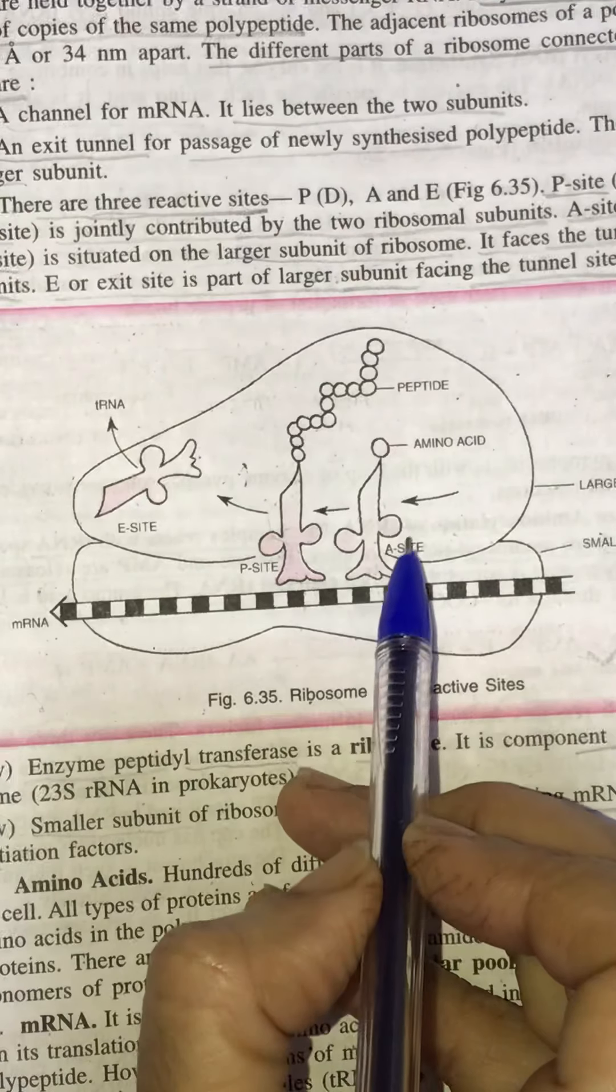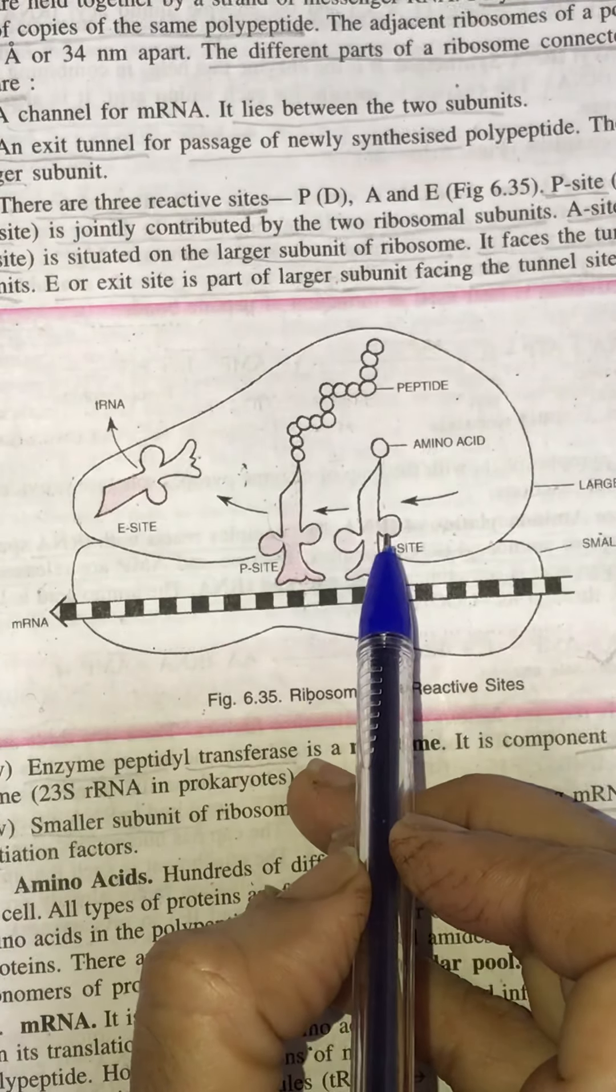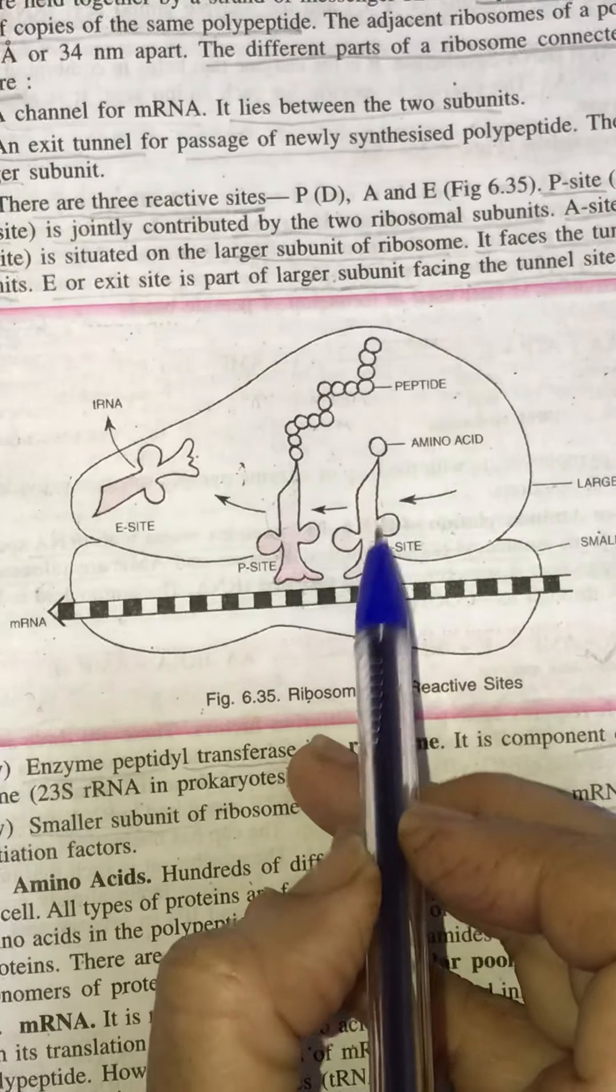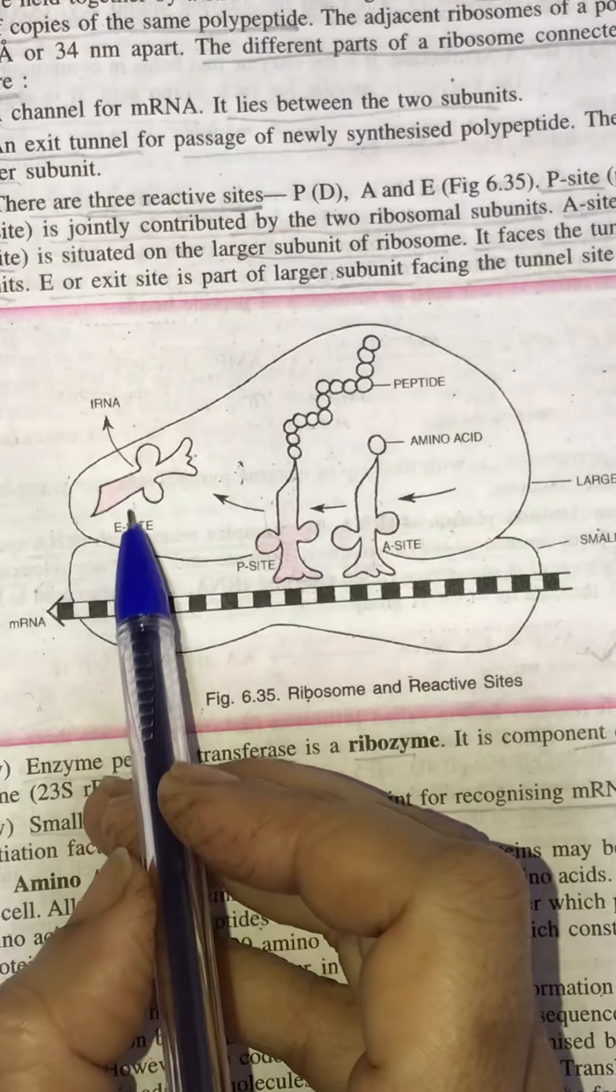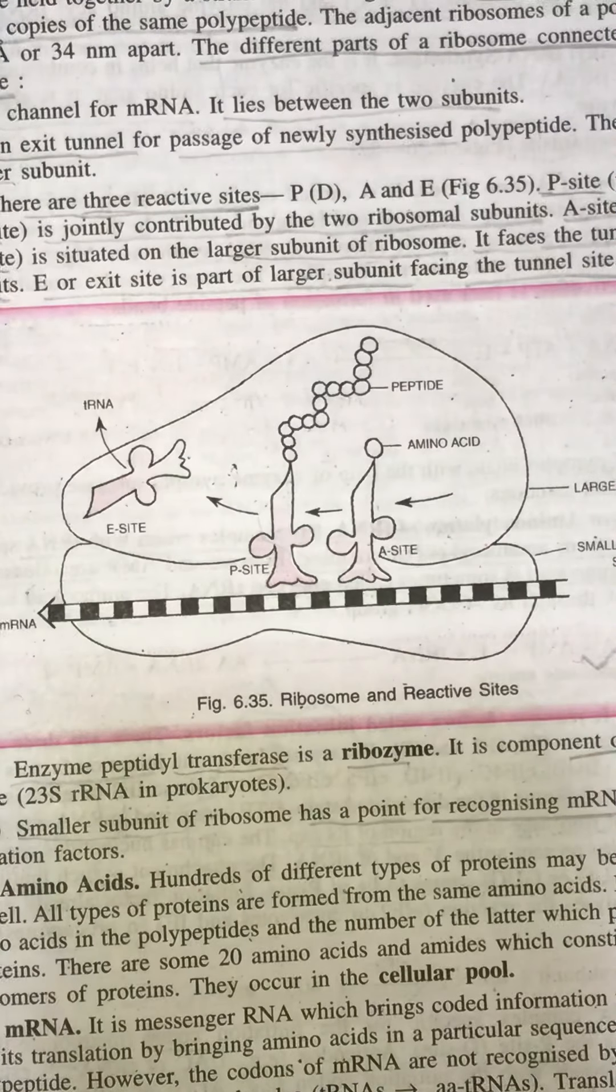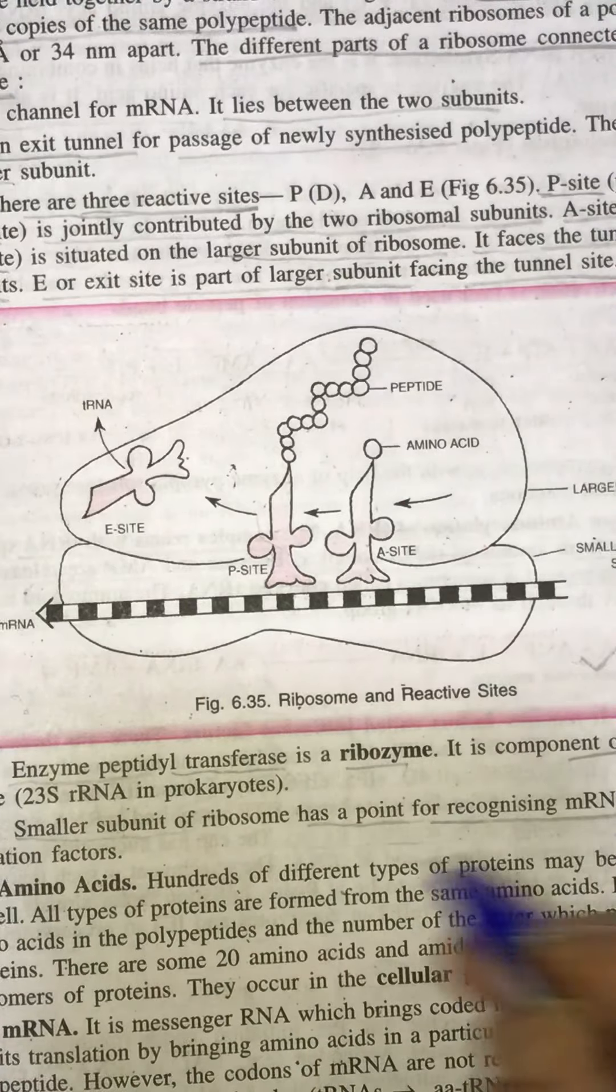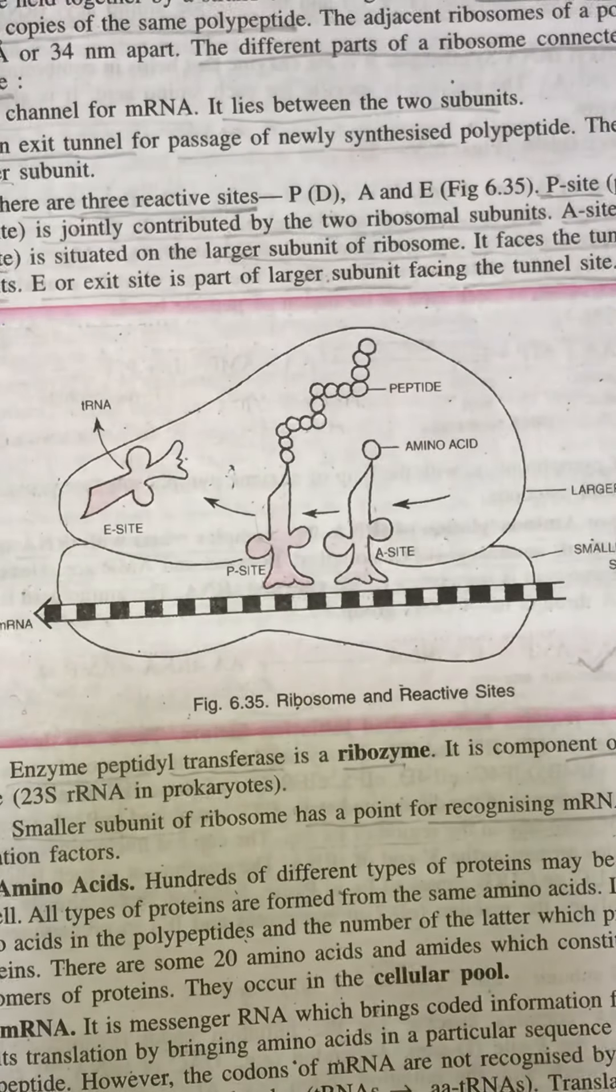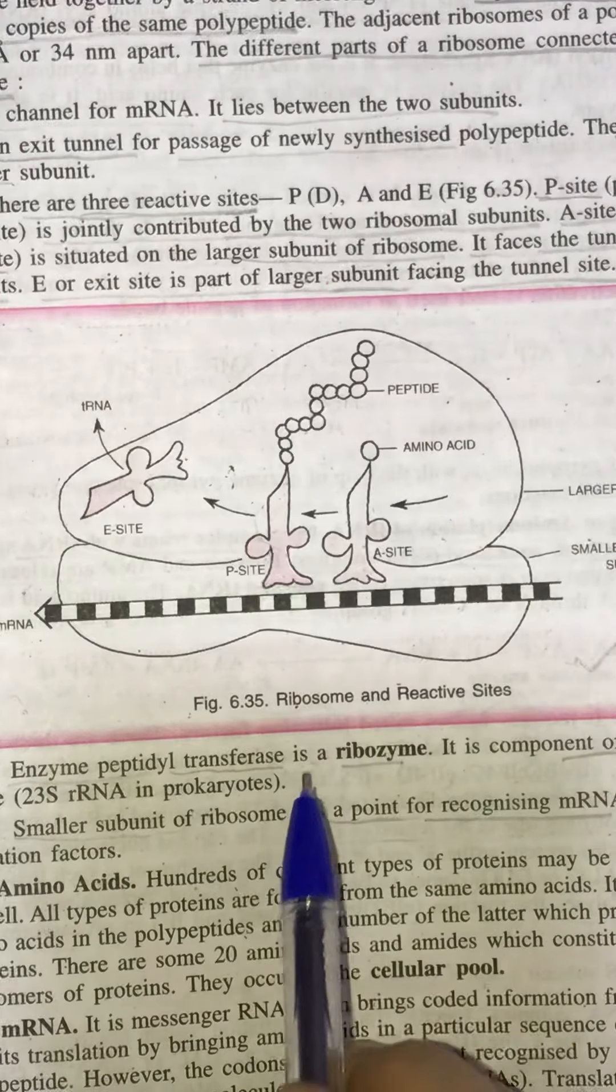Here the tRNA comes with the new amino acid. This P site is jointly contributed by both the units of the ribosomes. Whereas A site, it is situated on the larger subunit. It faces the tunnel between the two subunits. And this E site is part of again larger subunit facing the tunnel side. Now, there is one enzyme that is called the peptidyl transferase or you can say it is the ribozyme. So it is called peptidyl transferase or ribozyme and again it is a component of the larger subunit of the ribosome. Smaller subunit of ribosomes has a point for recognizing the mRNA.